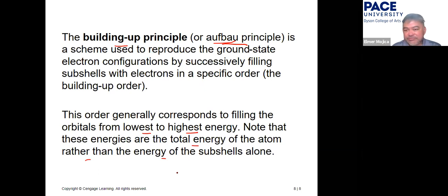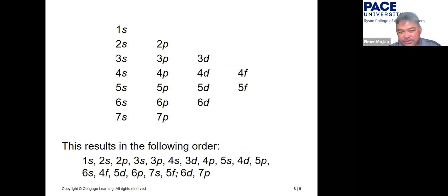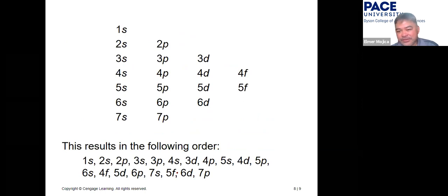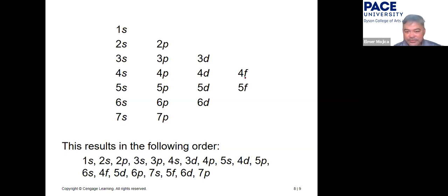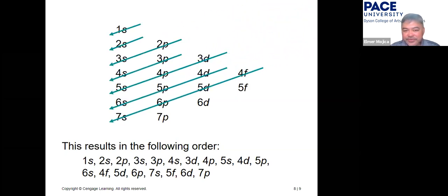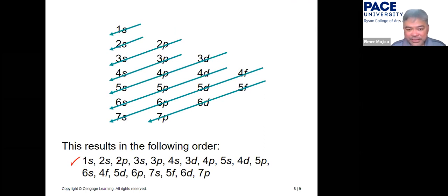The simplest technique is to line up all the orbitals according to subshell — all the s, then p, then d, then f — write the principal quantum number, draw a diagonal arrow, and follow the arrow. That gives you the sequence in which orbitals are filled by energy level.